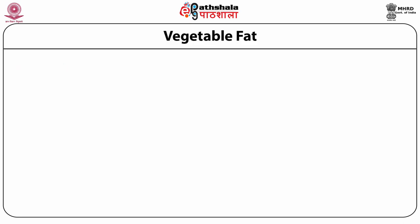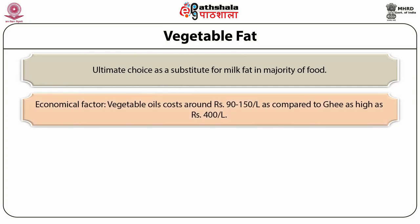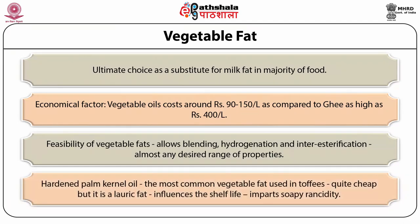Vegetable fats are the ultimate choice as a substitute for milk fat in the majority of food products including sugar confectionery. Economical factors make manufacturers switch to vegetable oils, which cost around 100 to 150 rupees per liter compared to ghee at 400 to 500 rupees per liter. Apart from cost, feasibility of vegetable fat allows its blending, hydrogenation, and interesterification to produce vegetable fat with almost any desired range of properties. The most common vegetable fat used in toffee was hardened palm kernel oil, which is cheap but its lauric fat influences shelf life due to soapy rancidity.